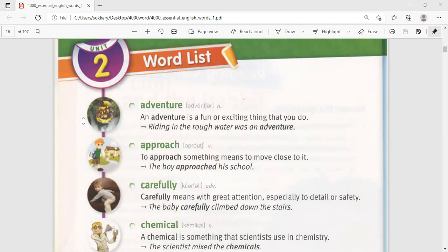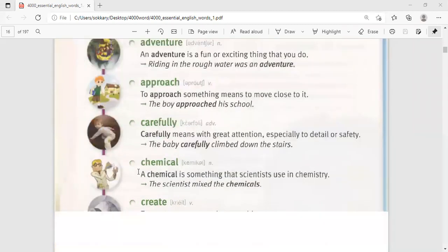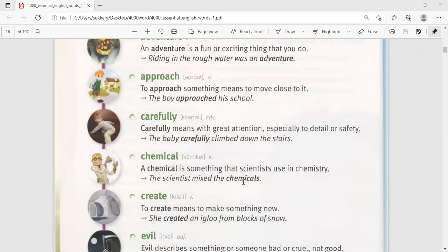Chemical. A chemical is something that scientists use in chemistry. The scientist mixed the chemicals.